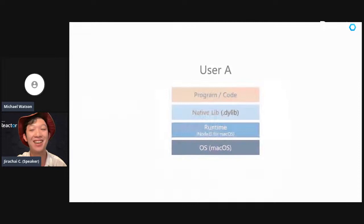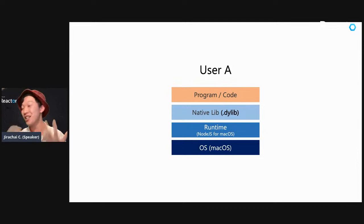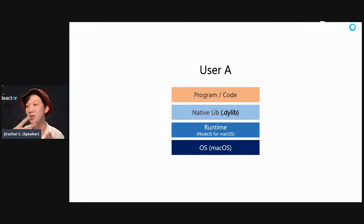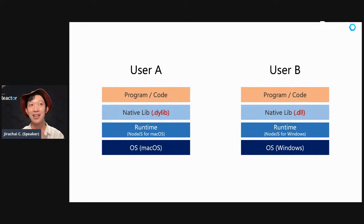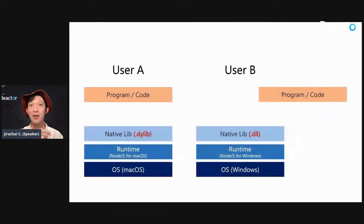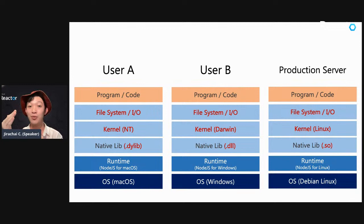Now we can see the slides. This is the first developer we were talking about — they use Mac OS with three or four components. When we had the second developer, you can see they had different native libs. And then we had a production server with a different environment. Besides that, we also had a different file system and even a different kernel.